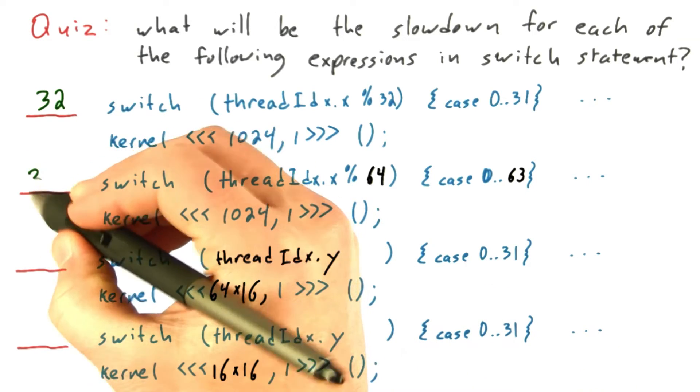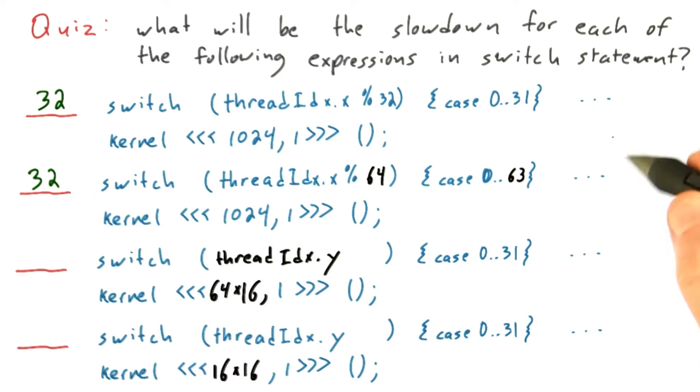So again, the maximum here is going to be 32. 32x slowdown for just this segment of code, for this switch statement in particular.